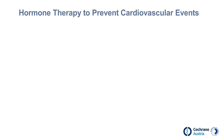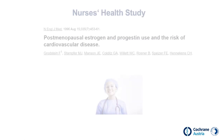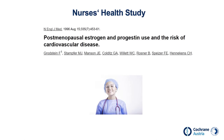Let's look at an example of why randomization is important. Until the early 2000s, hormone therapy was a commonly recommended preventative intervention to reduce the risk of cardiovascular events in women after menopause. This recommendation was mostly based on findings of the Nurses' Health Study, a large, well-conducted prospective cohort study with more than 59,000 nurses.